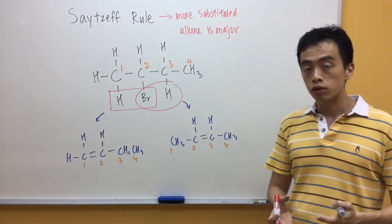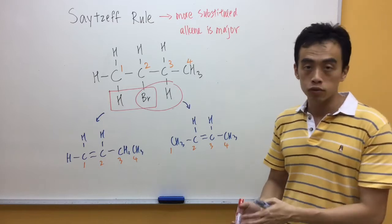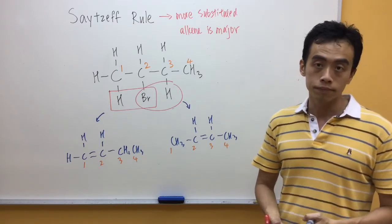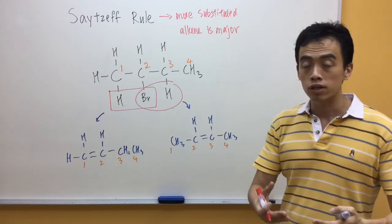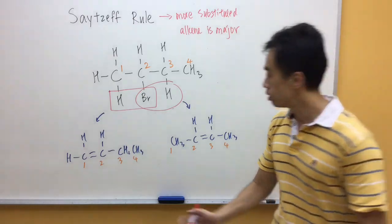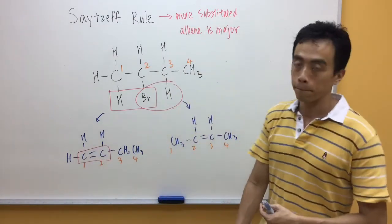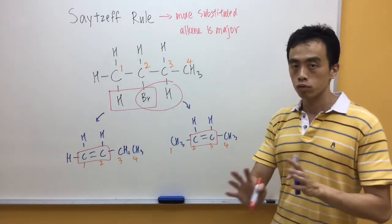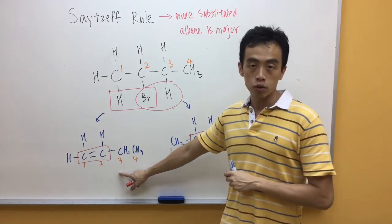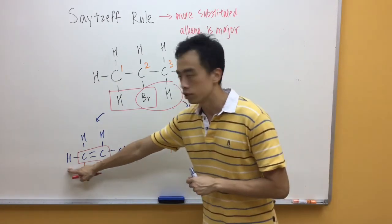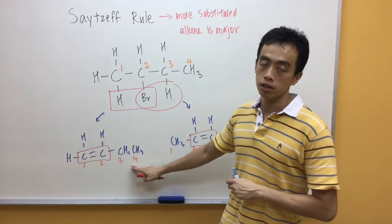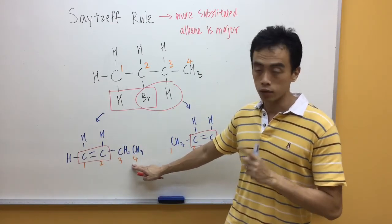Now, when the two products are drawn out, we have to look at the degree of substitution, which is basically the number of R groups attached to the alkene. In order to determine this, I box up the C double bond C. For the first compound, the substituents are: hydrogen, hydrogen, hydrogen, hydrogen, and a CH3 group — so this is considered as one R group.